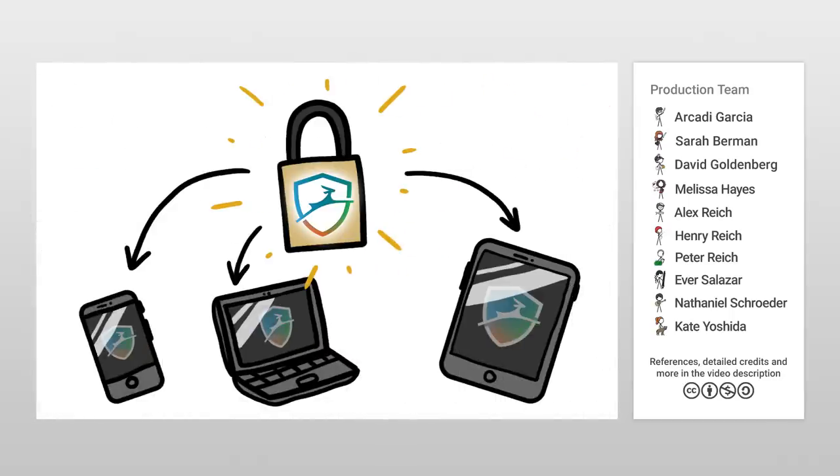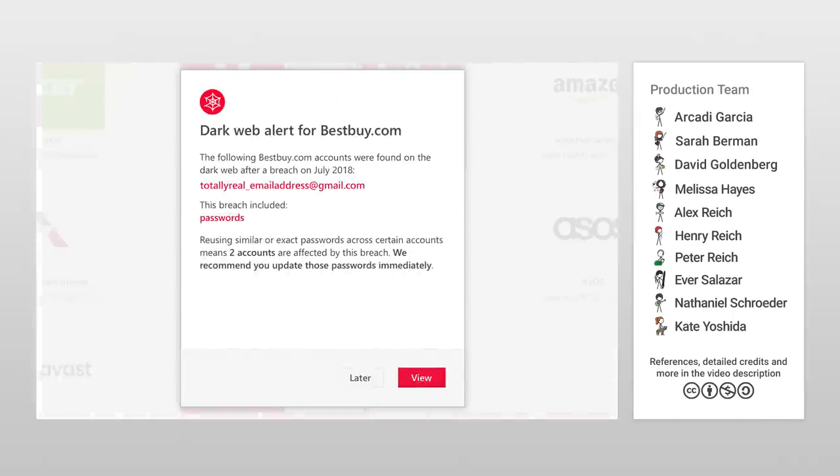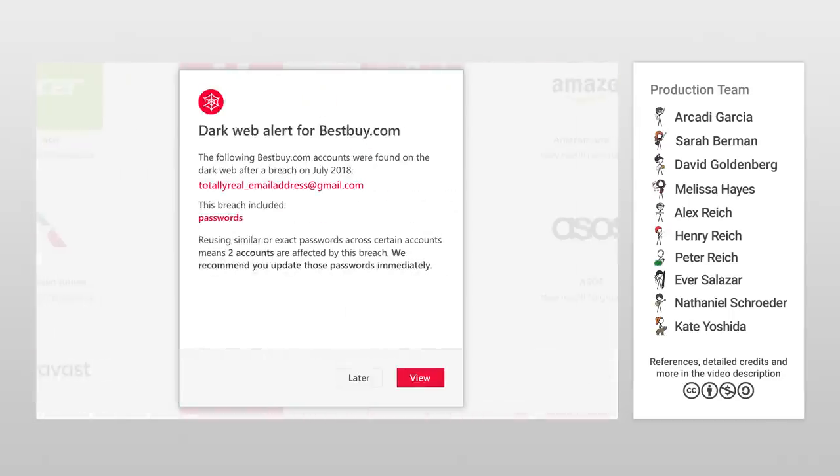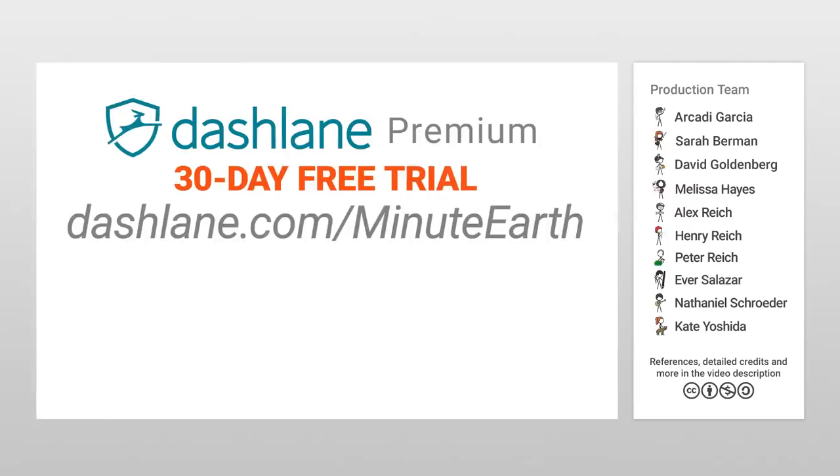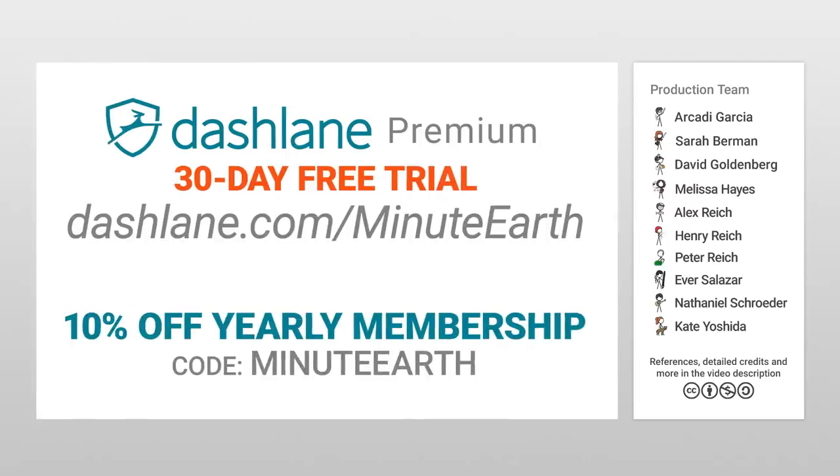Dashlane also has a secure multi-country VPN for all my devices, and security alerts if it finds my data on the dark web. To download your own free 30-day trial of Dashlane Premium, go to dashlane.com slash minute-earth. The first 200 viewers can also get 10% off a yearly Dashlane Premium membership using the code MinuteEarth at checkout. Thanks Dashlane!